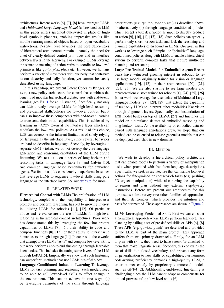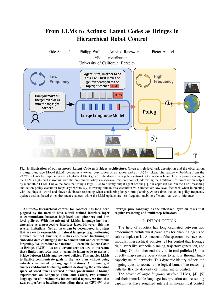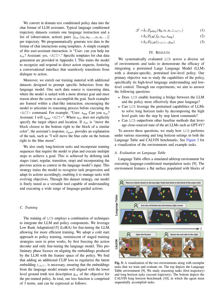Sixth, interpretability and explainability: the method's reliance on latent codes and embeddings for communication between layers may make it harder to interpret or explain the decision-making process, potentially reducing transparency. Seventh, training data requirements: LCB necessitates strategically curated datasets for effective training, including diverse language instructions and corresponding action pairs, which may require significant effort and resources to collect and pre-process. Eighth, performance variability: the performance of LCB could vary based on task complexity, the quality of language instructions provided, and the specific interactions between the LLM and policy components, leading to potential inconsistencies across different scenarios.